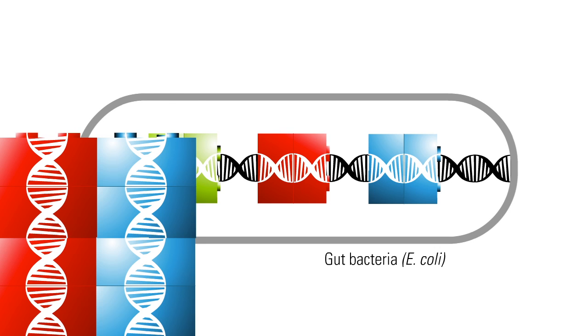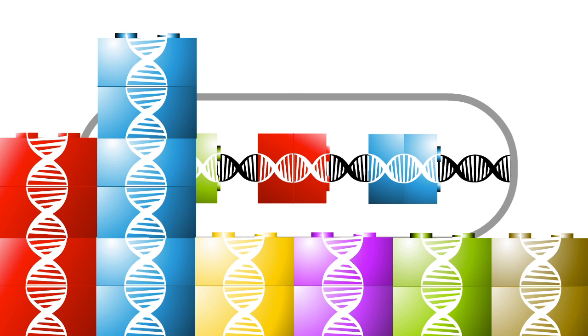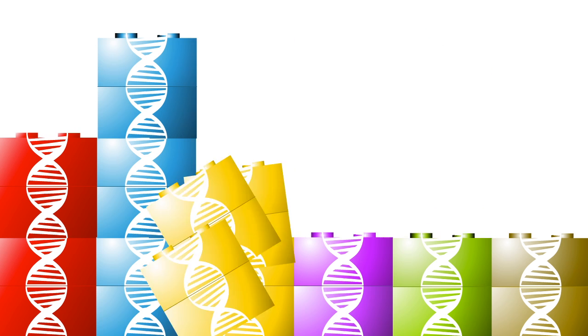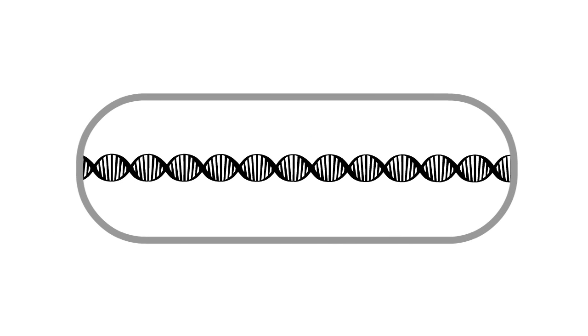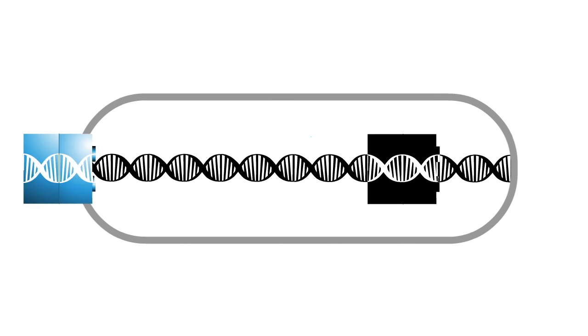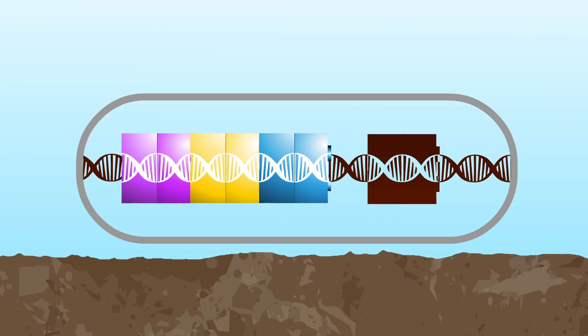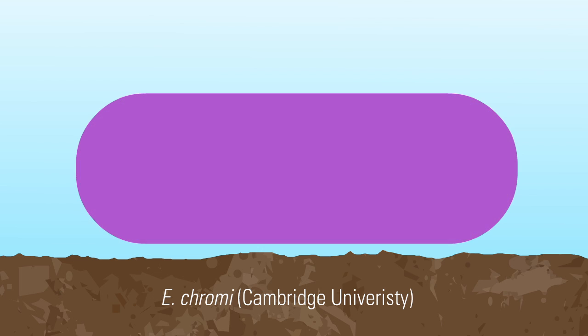Sure, they're toy projects with shoestring budgets, but the results are impressive. E. chromi. An E. coli with sensitivity tuner and color generators is programmed to turn one of five colors when it detects a certain concentration of an environmental toxin.